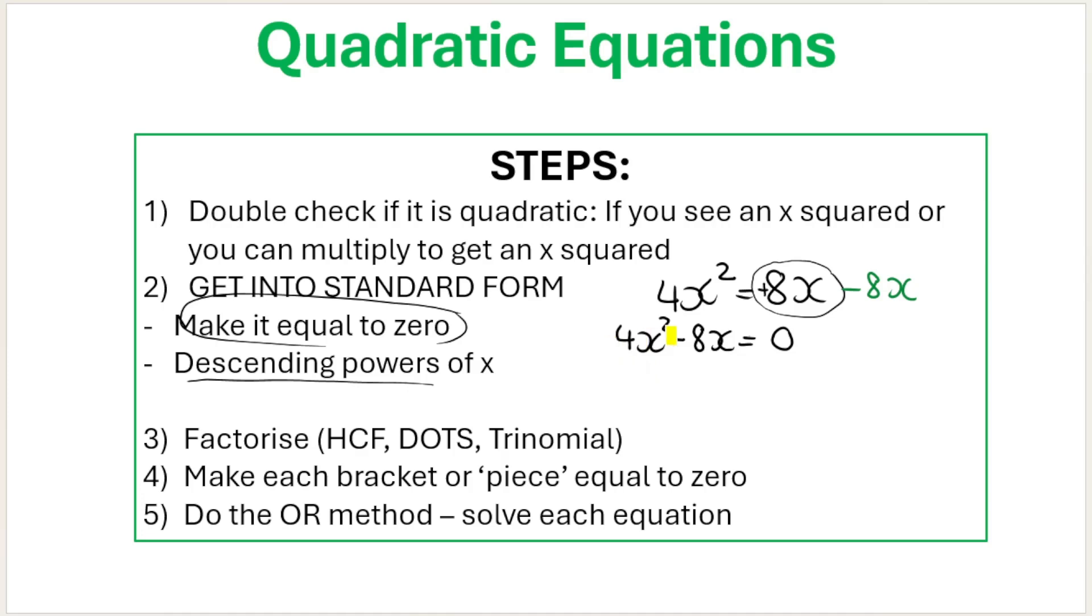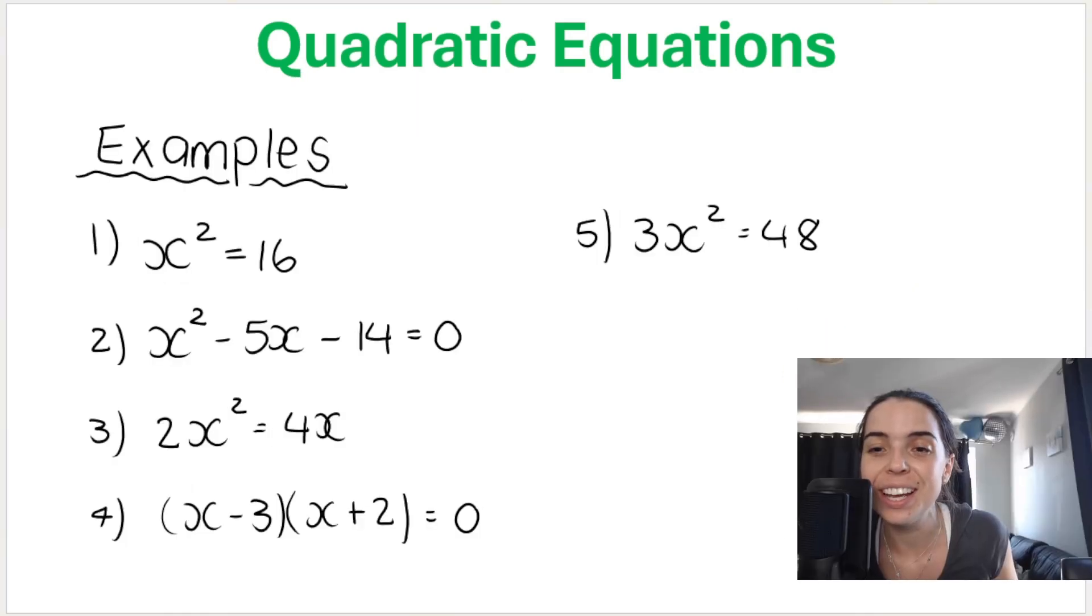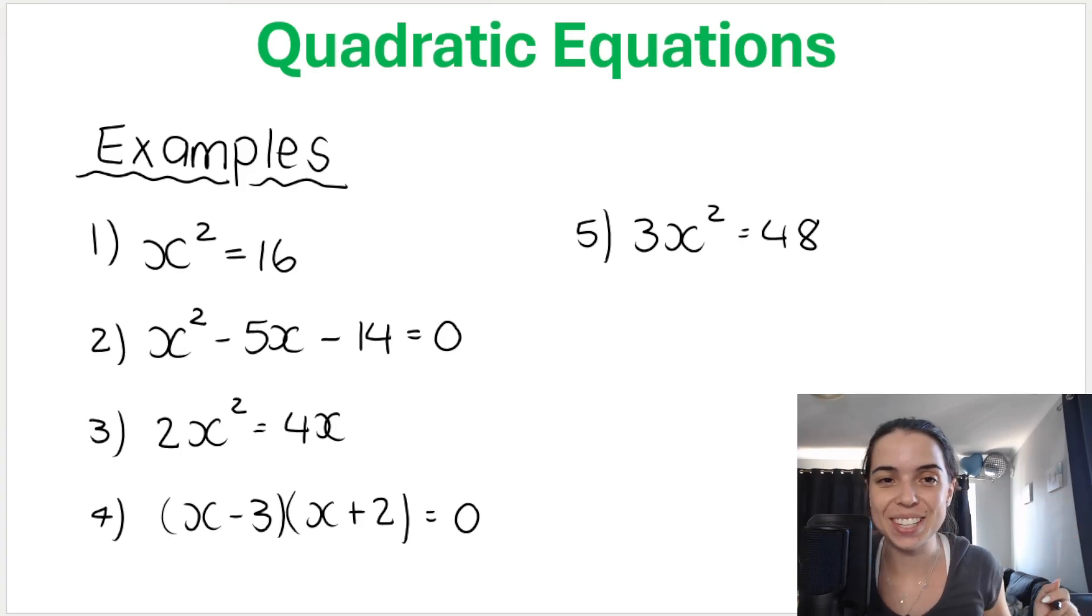And descending powers of x, that just means that when you put the terms in order on the one side of the equation, the x with the biggest exponent goes first, so x squared, and then x to the power of 1. So, for example, this would be descending powers of x. x cubed plus x squared plus x plus 2, for example. This has got the biggest exponent, then this one, then this one, and this one has no x. Or technically x to the power of zero, if you want to be technical. Okay, so get it into standard form. And then we have step 3, 4, and 5, which I'll get to when I jump into the examples that you see on the screen. So these examples will be covered in this playlist. Let's do some.